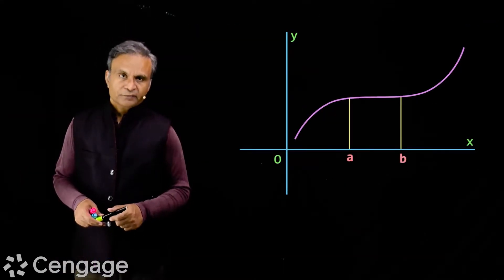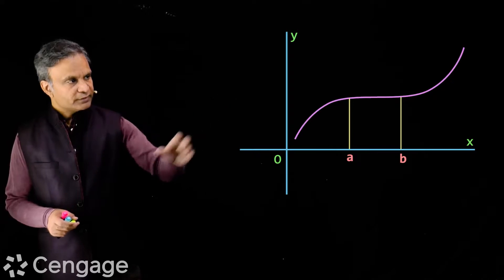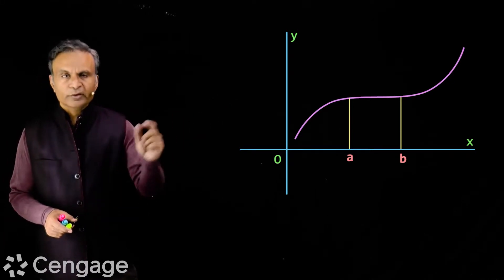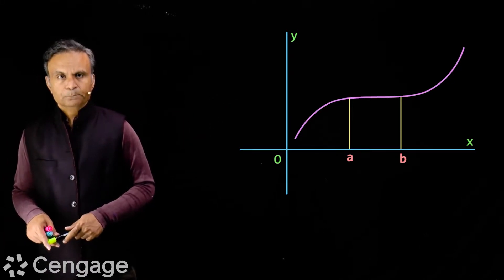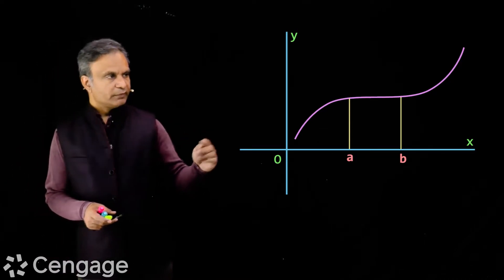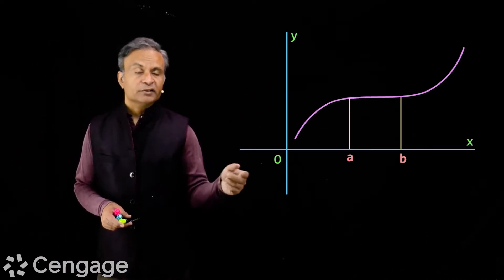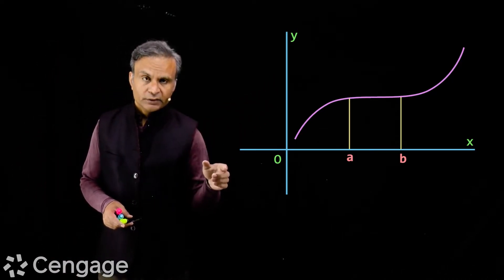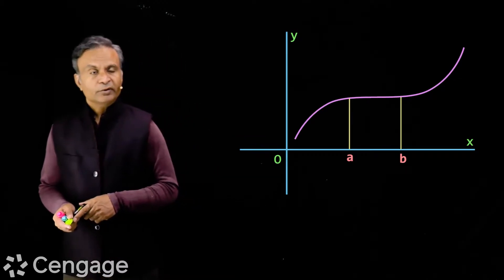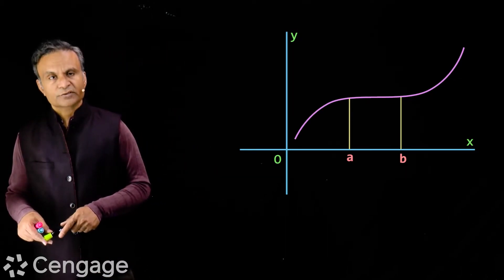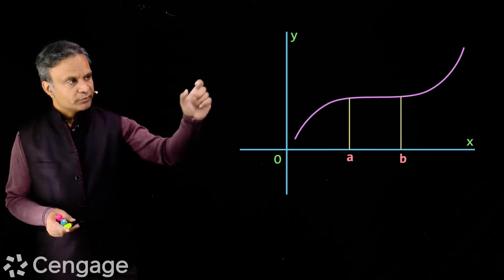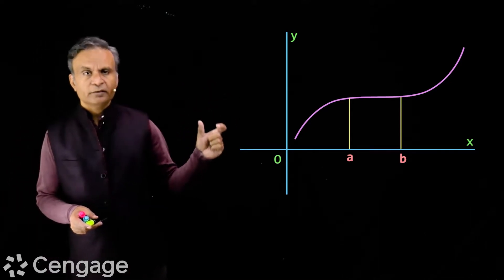Now consider a function y = f(x) having a particular graph. This is a unique function. For x less than a and x more than b, the function increases — in fact it is strictly increasing. But between a and b the function is constant; the graph is parallel to the x-axis.